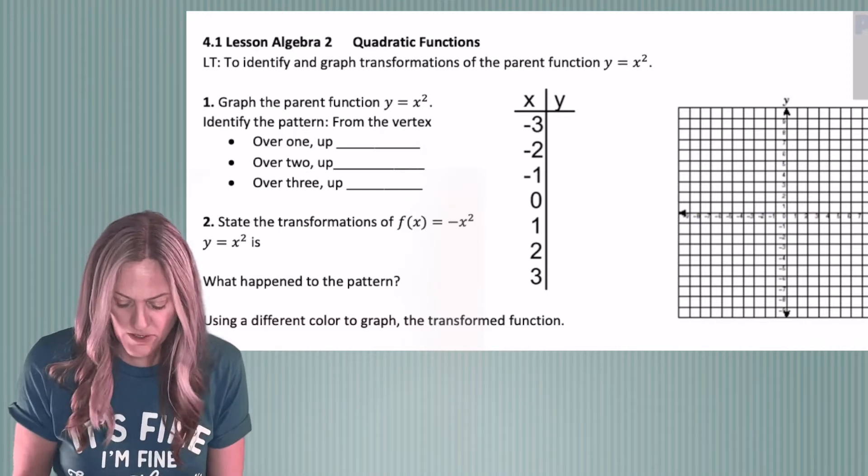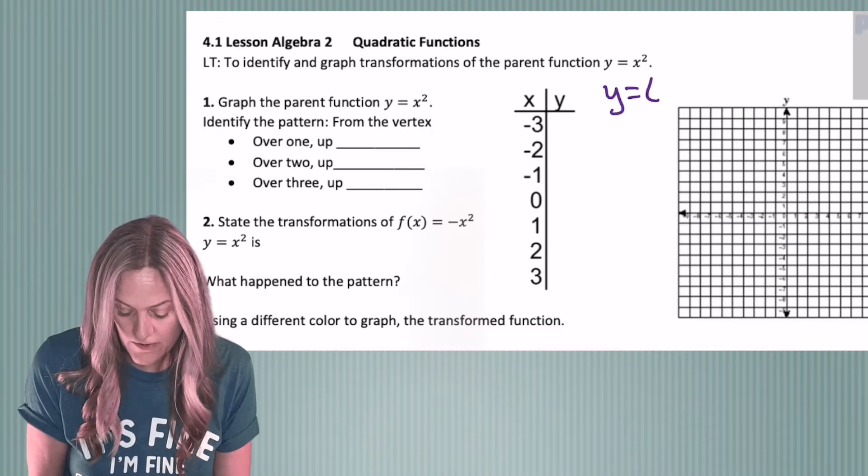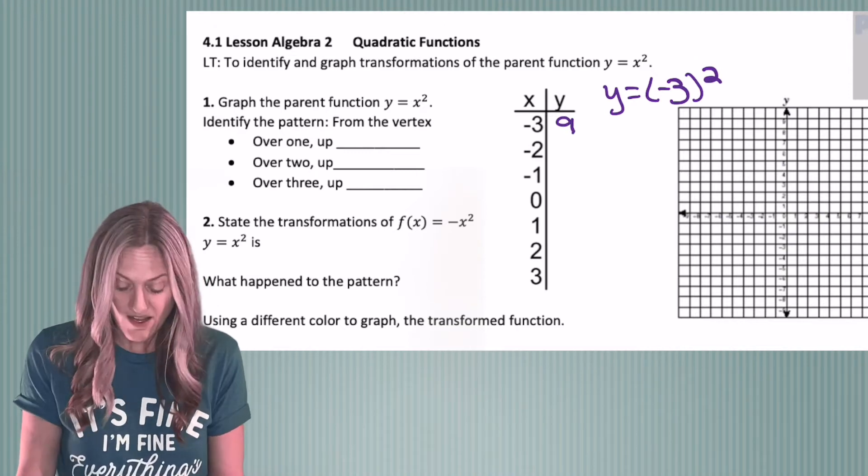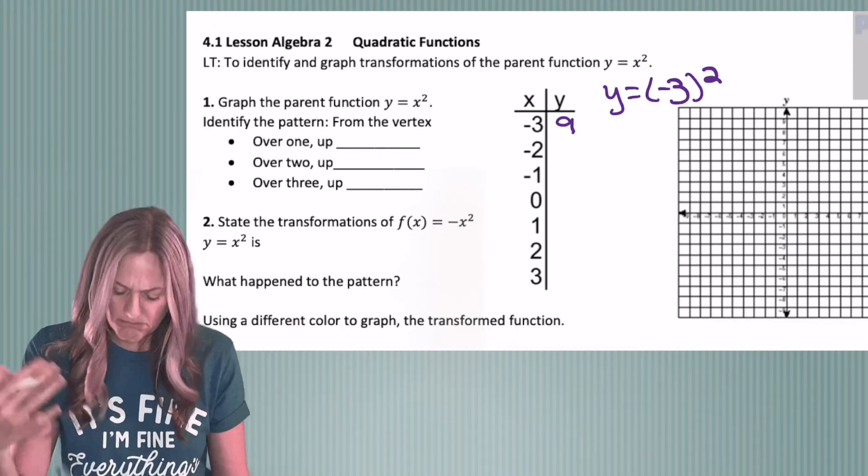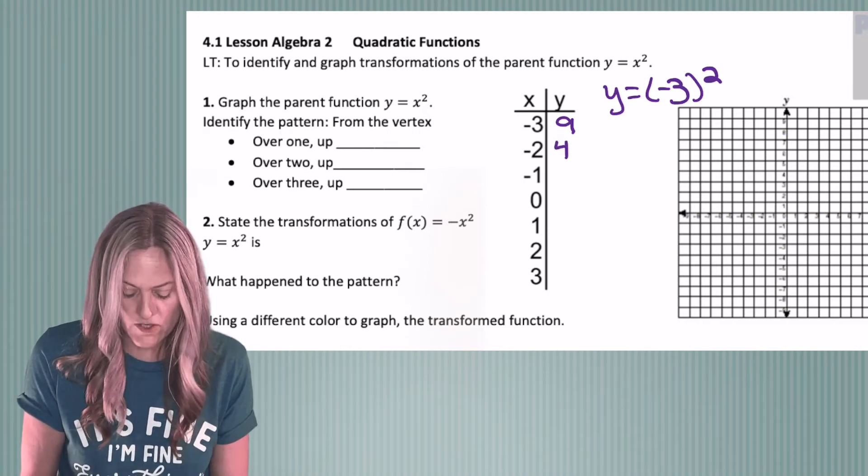Let's do our table of values. If x is negative 3, then y equals negative 3 quantity squared, we get positive 9. Go ahead and finish the table. If x is negative 2, negative 2 squared, 4, and so on.